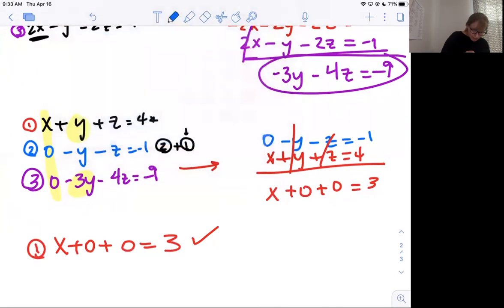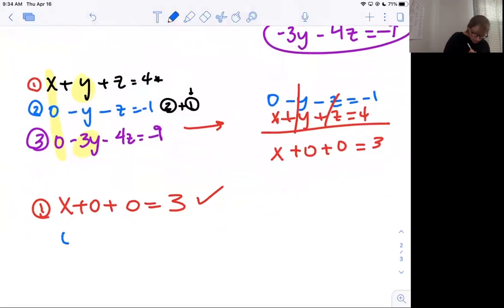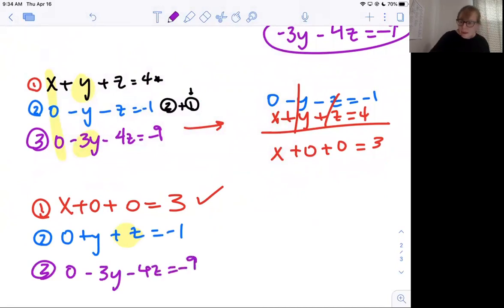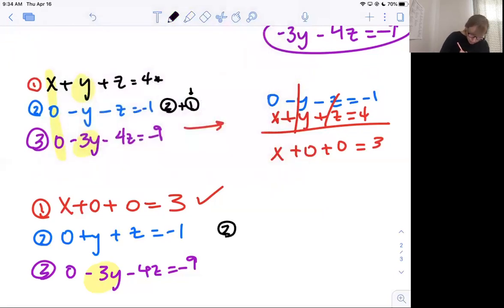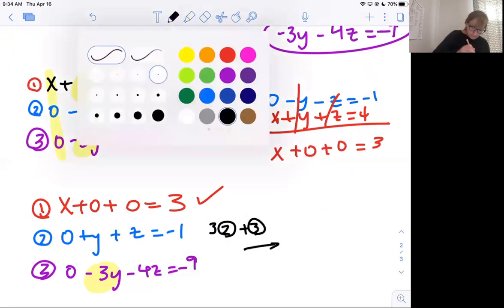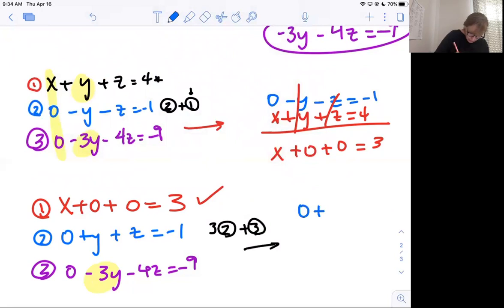My Y's cancel and I'm left with 1X plus 0 plus another 0 equals 3. So now my row 1 is X plus 0 plus 0 equals 3. Before I copy row 2, I'm going to change all my signs to be positive. That helped me last round, but I want positive ones, not negative ones. So now I'm good on row 2, except for this Z term. And row 3, I've got 0 minus 3Y minus 4Z equals negative 9. My next goal is to get rid of this Y. So I want that to be 0. I'm going to multiply row 2 by 3 and add that to the third row.